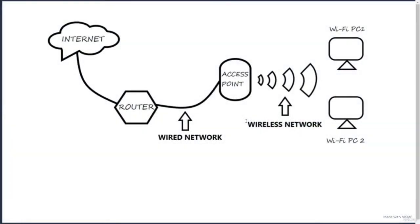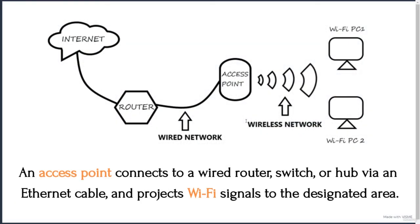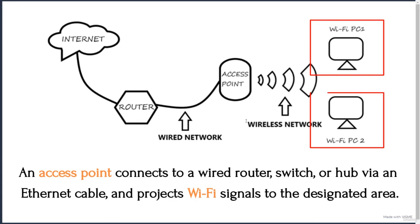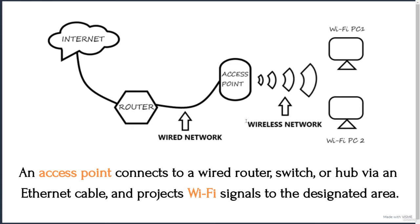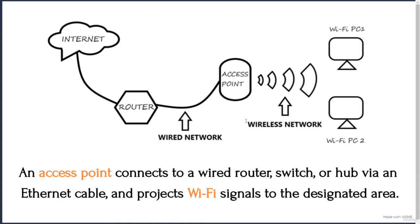In the diagram, we have two computers: Wi-Fi PC1 and Wi-Fi PC2. Both of these are not using any wires and hence they are in the wireless network. These computers are connected to the access point via wireless network, and then the access point is connected to a router via a wired network. The role of the router here is to enable the use of internet so that both PCs can have internet access.